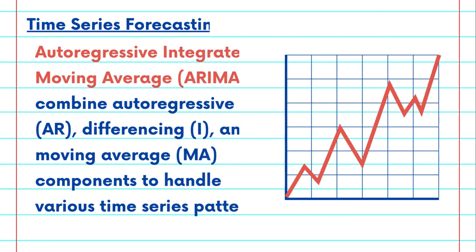Autoregressive Integrated Moving Average (ARIMA) models are a powerful tool for time series forecasting. They combine autoregressive (AR), differencing (I), and moving averages (MA) components to handle various time series patterns.